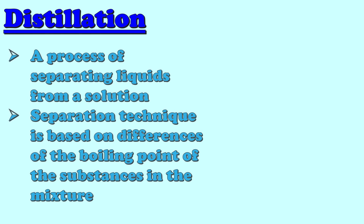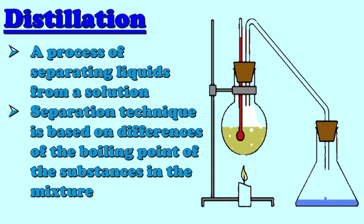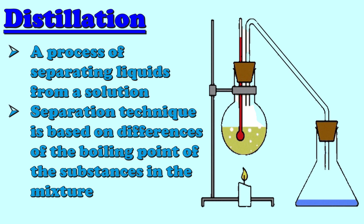We have distillation. Distillation is the process of separating liquids from a solution. The separation technique is based on the differences in the boiling points of the substances in the mixture. In distillation, a mixture is heated. The substance with the lowest boiling point boils to vapor and condenses to liquid, and it is collected as distilled water. Most homogeneous solutions can be separated by distillation.